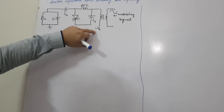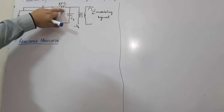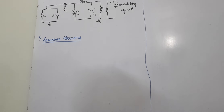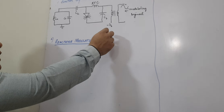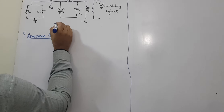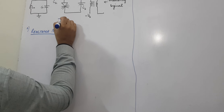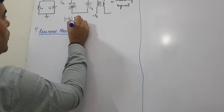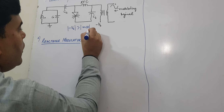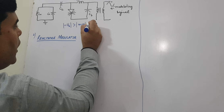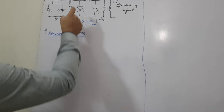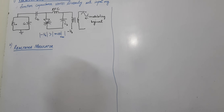If we apply minus VB, the current will flow through the RFC and then this diode will be reverse biased. The selection of minus VB should be such that the amplitude of the negative VB should always be greater than the maximum value of the input message signal voltage. This condition must be satisfied in order to keep the diode reverse biased.